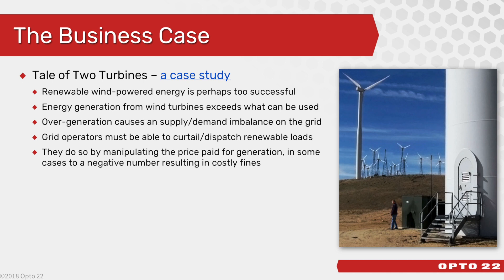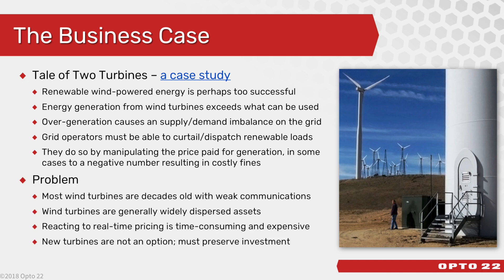Grid operators responsible for keeping our electrical grid in constant balance are faced with a dilemma. Renewable sources of energy are generally not dispatchable — meaning you can't just turn them off and on. So they came up with a way to dispatch these energy sources by changing the price they'll pay for the generation. When they really don't want any more energy on the grid, they'll change that price to a negative dollar value — meaning you generate electricity when the grid doesn't want it, you pay them. The problem for turbine operators is that these turbines generate when the wind blows, and the only economical course of action is to retrofit the existing turbines, making them smarter by joining the Industrial Internet of Things.